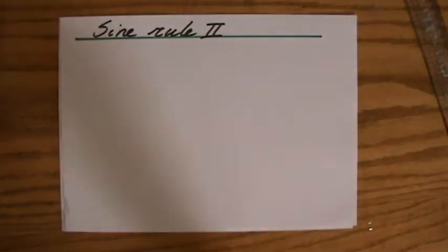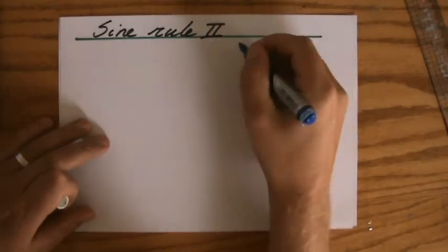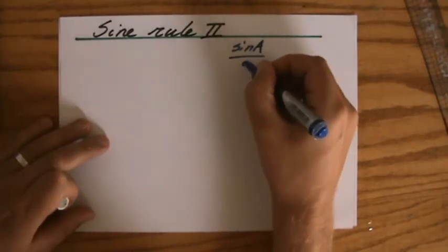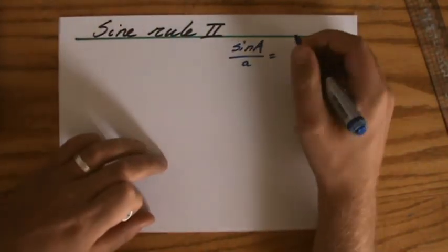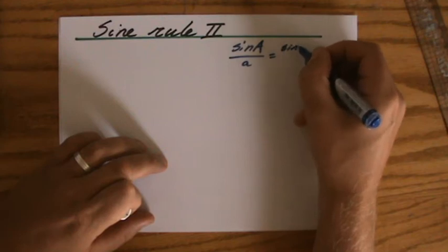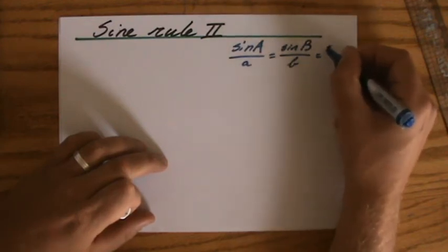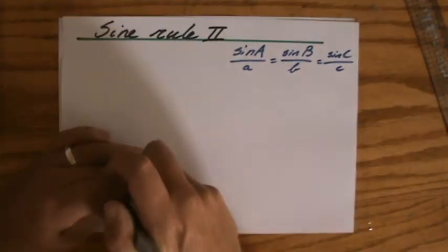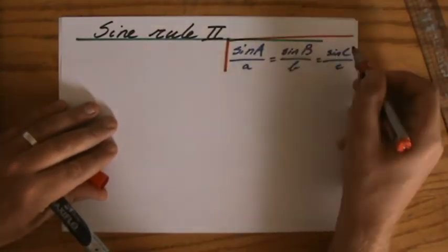It's good to see you and we're talking about the sine rule where we have said that the sine of A over a, so the sine of a particular angle divided by its opposite length, is the same as the sine of another angle divided by its opposite length and also the same as the sine of the other angle divided by its opposite length. That's the sine rule.